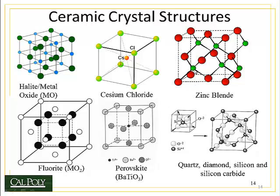There's also the zinc blende structure, which is more complicated — one element sits in the center of tetrahedral sites between four other elements. There's also fluorite, which is made up of a metal atom and two oxygen atoms, or MO₂. There's perovskite; an example is barium titanate, which has a piezoelectric effect — if you compress this crystal, it distorts the dipoles between the atoms and creates an electrical charge, which is how piezoelectric crystals work. And then there's the quartz crystal structure, also used for diamond, silicon, and silicon carbide, where you have SiO₂ forming tetrahedral structures with silicon in the center and oxygen on the outside. If this were diamond, all these atoms would be carbon.